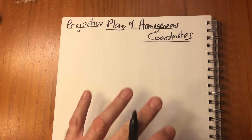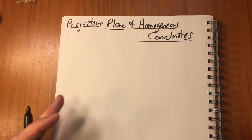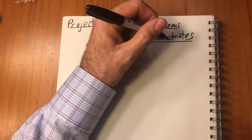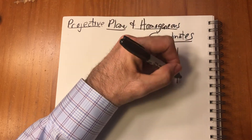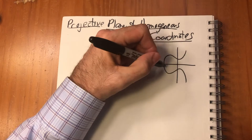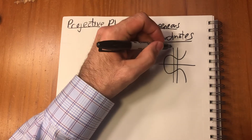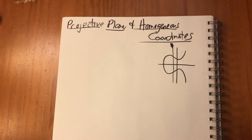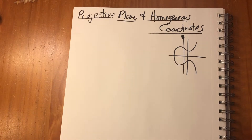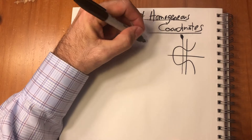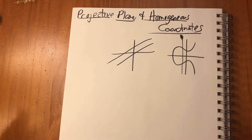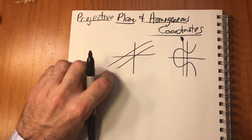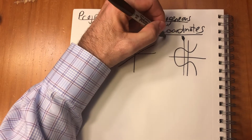The projective plane is a way to add points at infinity. We need this because when we're looking at elliptic curves and the group law, any of the vertical lines need to go up to infinity. So we need a point at infinity. In regular Cartesian coordinates, parallel lines never meet, and what we want is a way to have these parallel lines meet at some point out at infinity.